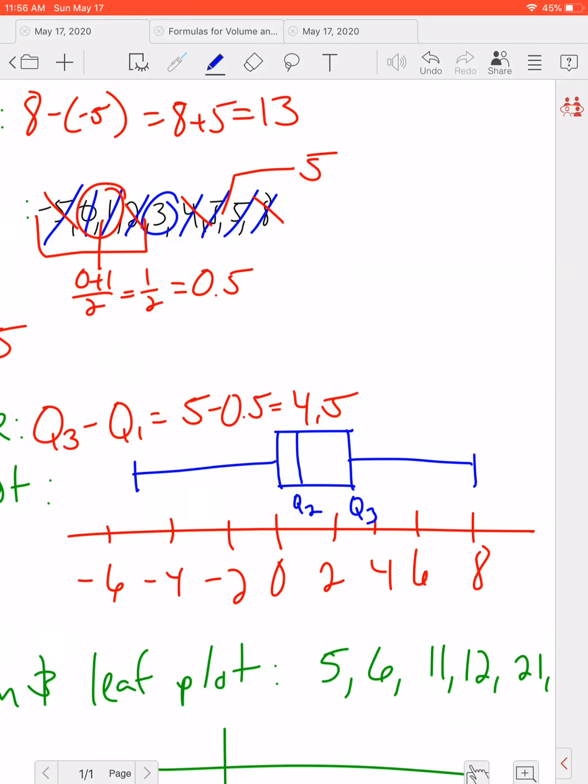Now remember, 25% of the data is between the smallest number and Q1. Another 25% is between Q1 and Q2. Another 25% between Q2 and Q3. And another 25% between Q3 and Q4.